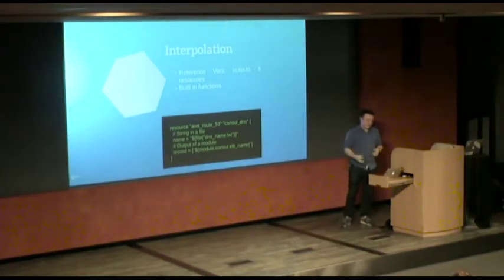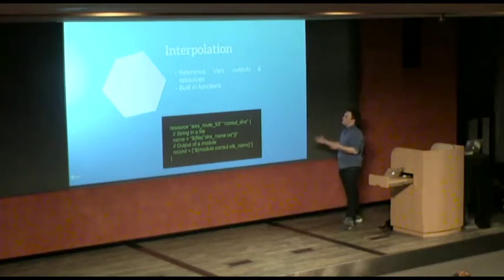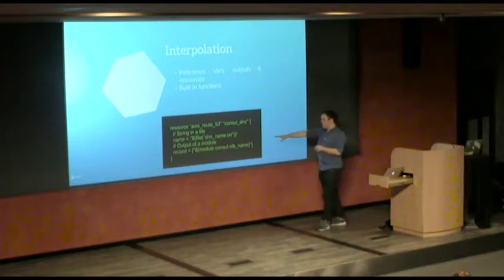So the great thing about outputs is that it exports them so you can use them in other modules. So you can make an AWS VPC, you can output the subnet ID from it or a list of subnet IDs. And then you can use that to make an auto scaling group or something else with another module. So far, we've seen a bit of interpolation, we're referencing variables in a few different places.